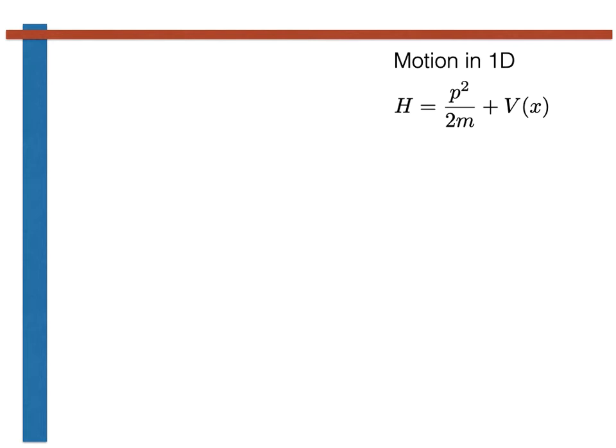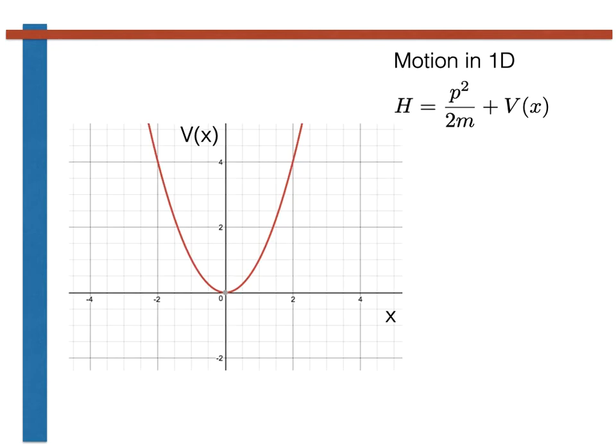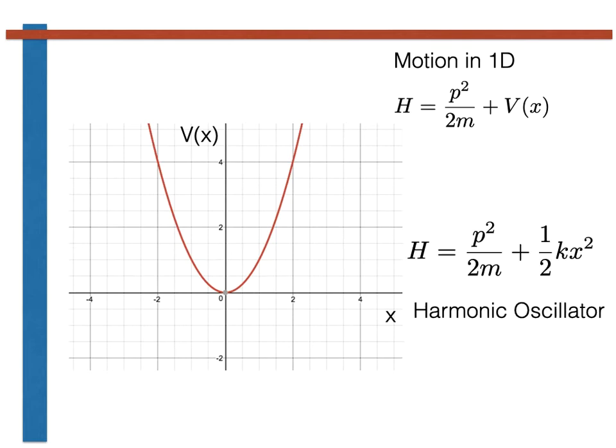The next thing to try is to make V of x a quadratic, as shown here. When we are doing so, we are assuming that there will be an oscillatory motion around the minimum in the potential. In other words, the system is going to fluctuate around a minimum in the potential energy. The Hamiltonian that we get when V of x is a positive quadratic is the Hamiltonian for a harmonic oscillator.